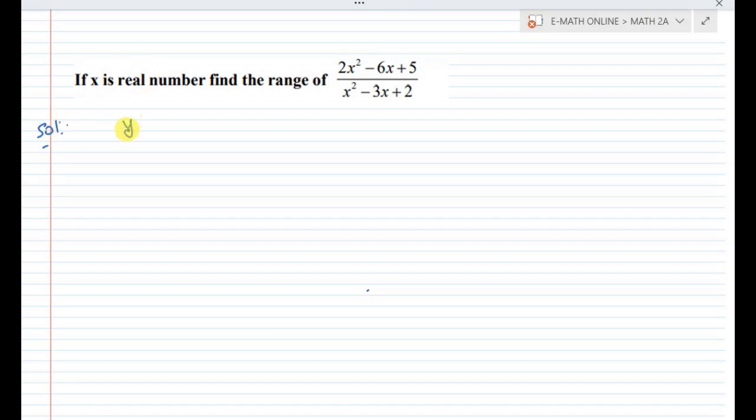In the equation, y is equal to the entire expression. So y equals 2x square minus 6x plus 5 divided by x square minus 3x plus 2. Cross multiplication: y times (x square minus 3x plus 2) equals 2x square minus 6x plus 5. Multiplying out: yx square minus 3xy plus 2y.